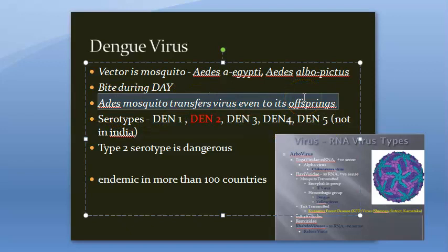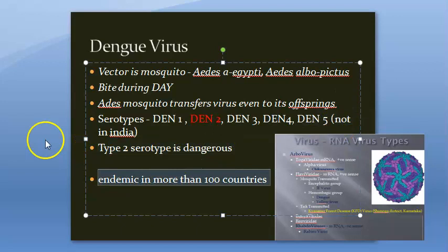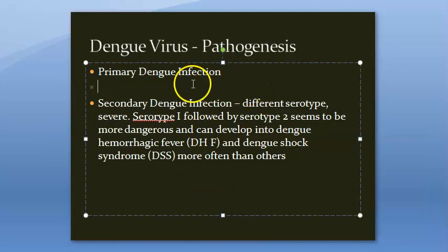The vector is Aedes aegypti and Aedes albopictus, which bites during the day. The Aedes mosquito can also transmit the virus to its offspring. There are five serotypes of dengue virus — 1, 2, 3, 4, and 5. Serotype 2 is very severe, and dengue 5 is not found in India.